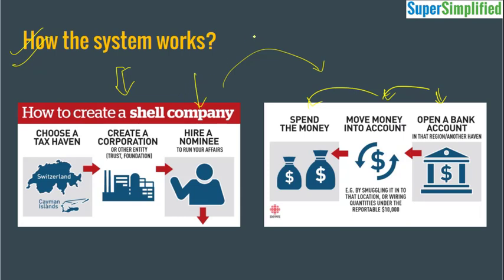Under base erosion and profit shifting, what companies do is — if they are operating in maybe 10 countries, a multinational corporation with high taxation in those countries — they create another office in one of the tax havens, for example in Bahamas, and show that 90% of their revenue is being generated from there. Because of the double tax avoidance agreements signed with countries — for example, India has also signed some of these agreements — there will not be taxation on the company when they bring this income into their country of actual operations, because the amount is already taxed in the tax haven. But the firm benefits because the rate of taxation is very, very low.